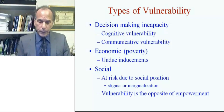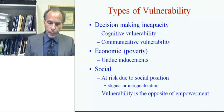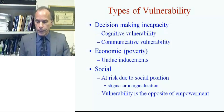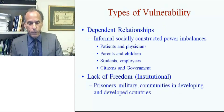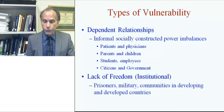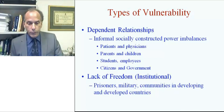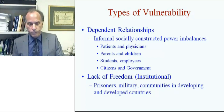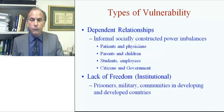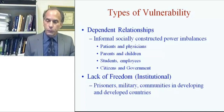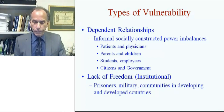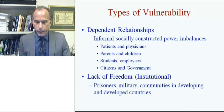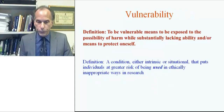This concept of social vulnerability could be better understood as vulnerability being the opposite of empowerment. Other types of vulnerability include dependent relationships — informal, socially constructed power imbalances seen between patients and physicians, parents and children, students and employees, and citizens and their government. Then we have institutional vulnerability, which includes a lack of freedom. This category would include prisoners, members of the military, and communities in developing and even developed countries as well.